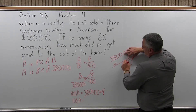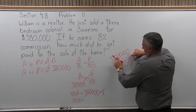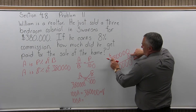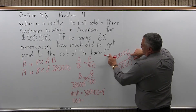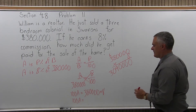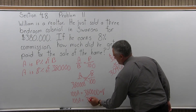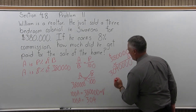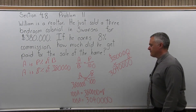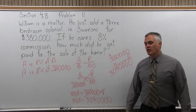8 times 0 is 0, 8 times the next 0 is 0, 8 times another 0 is 0, 8 times 0 again is another 0. Now, 8 times 8 is 64 — write the 4 here and carry the 6. 8 times 3 is 24, plus 6 more that we carried, so 24 and 6 more is 30. So 380,000 times 8 is 3,040,000. That's a very big number, and again, that's not the answer — that's 100A.